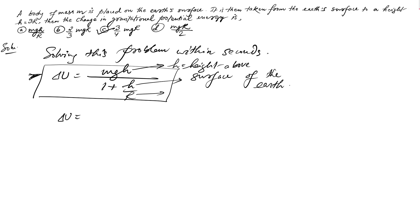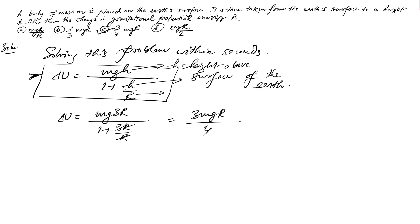Using this formula for our problem: ΔU = mg(3R) divided by (1 + 3R/R). The R terms cancel, giving 3mgR/4. That took around 3 to 5 seconds — very simple, just remember this formula.